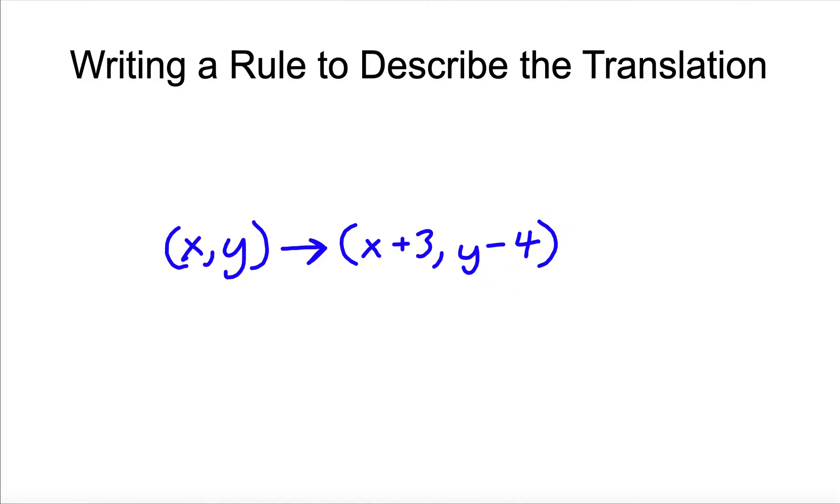So when you do a rule for a translation, all this is here is going to be there. The arrow, the parentheses is just going to be your plus three. That may be different. And what do you do to the Y minus four. That's going to be a little different too.